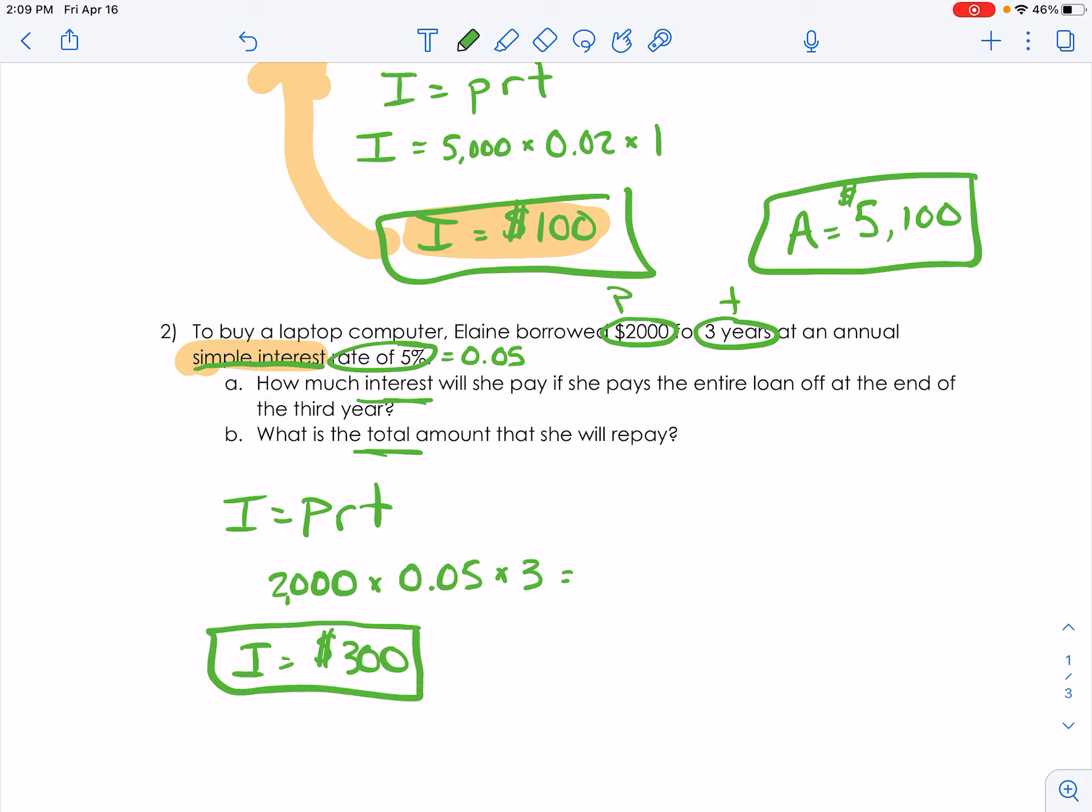Answer B wants us to find out what is the total amount she'll have to repay. Now, it sure would be nice if someone gave us $2,000 to go buy a computer and we only had to pay them back $300, but that's not the case. We still owe them the $2,000 that we started with.